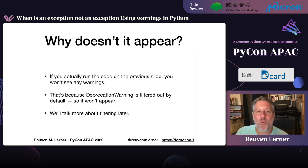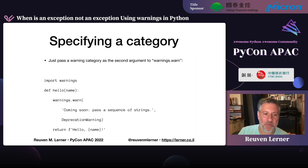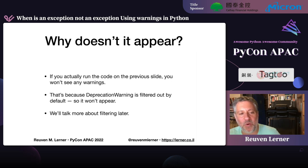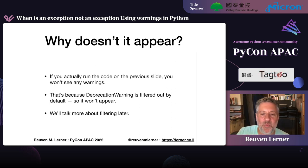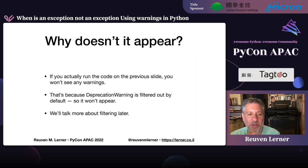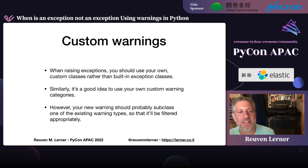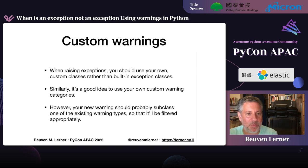Now if you run code with DeprecationWarning as the category, you actually won't see any warnings — because DeprecationWarning is filtered out by default. Normally, deprecation warnings are not displayed on screen at all. Different warnings have different filters associated with them, which we'll see in just a moment.